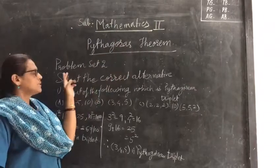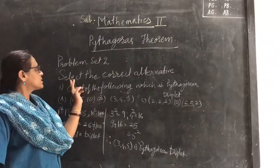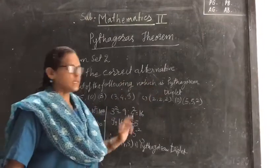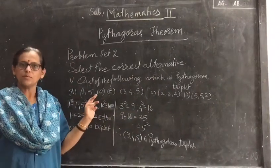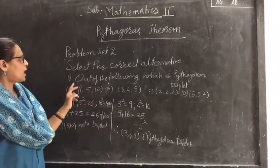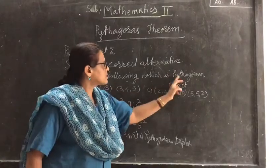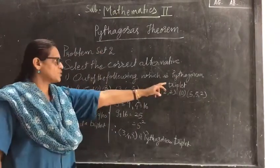One that is true, Pythagorean theorem, problem set 2. Select the correct alternative, that is multiple choice question, which is for 1 mark each. Out of the following, which is Pythagorean triplet? This is your question.